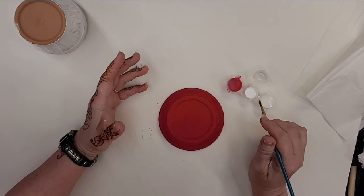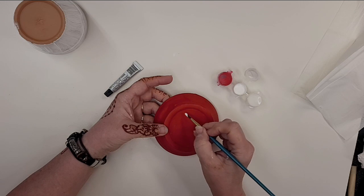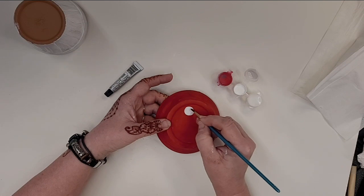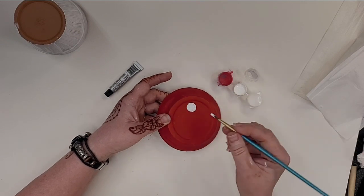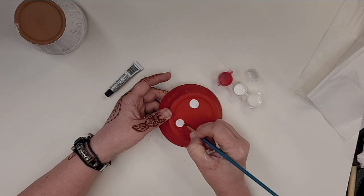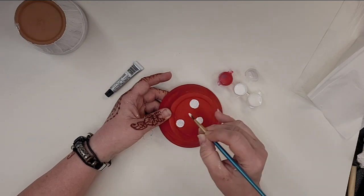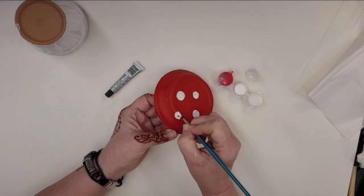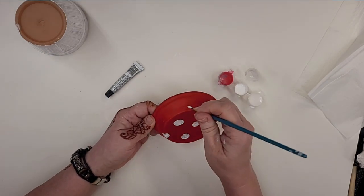The red is dry now. I'm going to take some of my other white and paint spots. Start out a little smaller than you think you want your dots to be because it's always easy to make them bigger. It's not so easy to go back and make them smaller. You just want to do them randomly. You don't want to put them in rows. That's not how nature works.